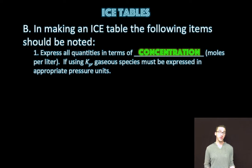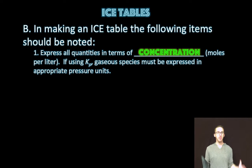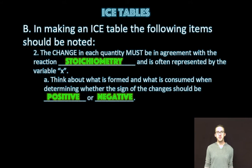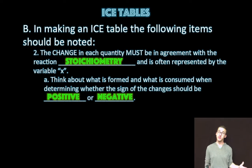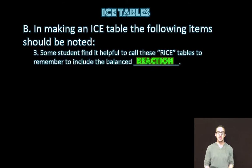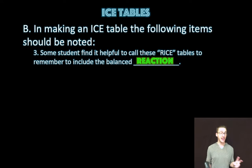A few things to keep in mind when you create ICE tables. One, express all quantities in terms of concentration, moles per liter. Two, keep in mind that the change in each quantity must be in agreement with the reaction stoichiometry. We often represent that by the variable X. You need to think about what is formed and what is consumed when determining whether the sign of those changes will be positive or negative. And three, some students find it helpful to call these RICE tables to remember to include the balanced reaction.